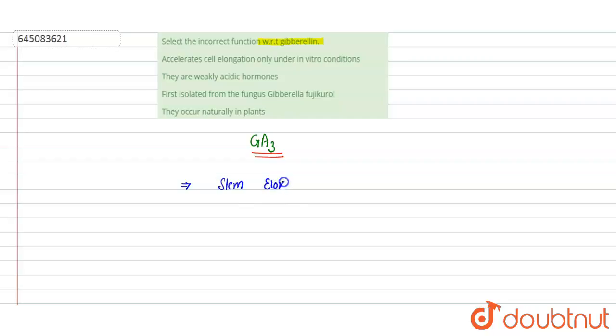Stem elongation is controlled by the gibberellic acid or GA3 plant growth regulator. They help in germination and dormancy. Their well-established role is there in flower development, in the induction of the flower, in development of flower.